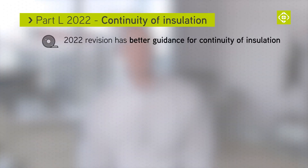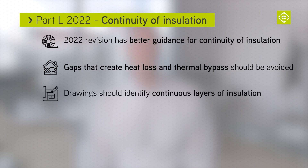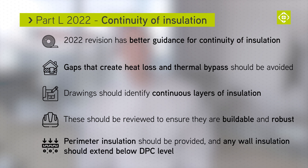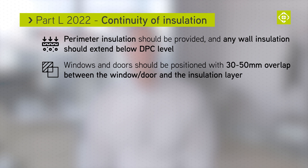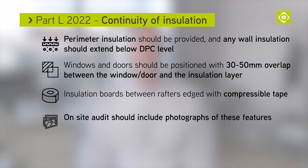The 2022 revision introduces better guidance for continuity of insulation. Gaps that create heat loss and thermal bypass should be avoided. Drawings should identify continuous layers of insulation and be reviewed to ensure they are buildable and robust. Perimeter insulation should be provided and wall insulation should extend below damp proof course level. Windows and doors should be positioned with a 30 to 50 mm overlap between the window or door and the insulation layer, and insulation boards between rafters should be edged with a compressible tape. The on-site audit should also include photographs of these features.